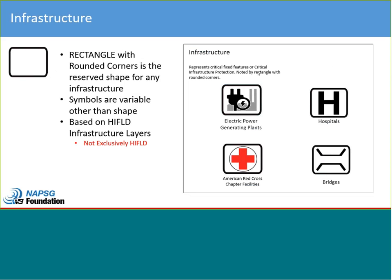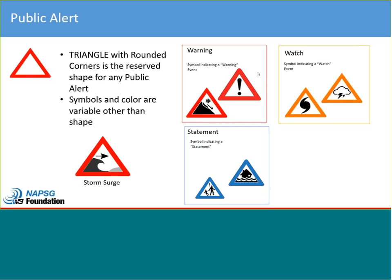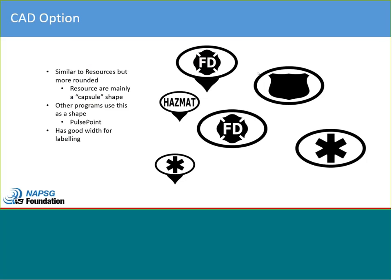Infrastructure symbology emerged from the need to symbolize HIFLD infrastructure layers, though it's not exclusively limited to HIFLD. The shape used is a rectangle with rounded corners. Public alert symbols support the IPAWS initiative and use a rounded triangle with a red, orange, or blue outline. The newest category is CAD or call-for-service symbology, which uses an oval shape — it works well in products like PulsePoint and Situation Analyst, and provides width for labeling. A teardrop design also works well for this purpose.